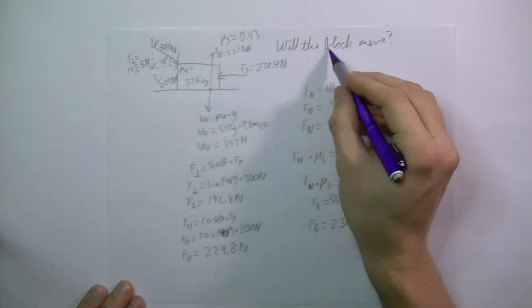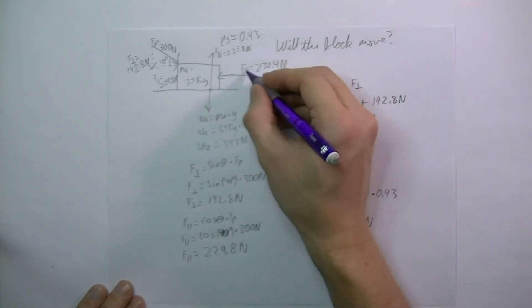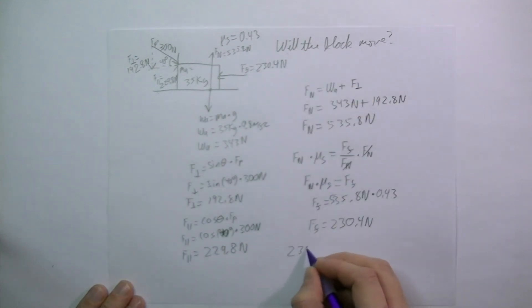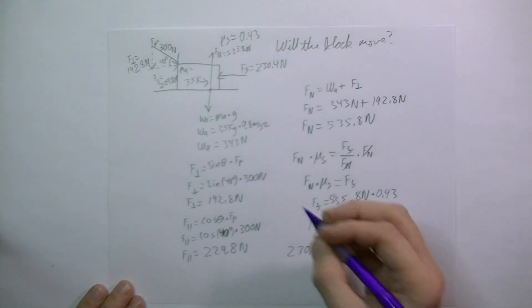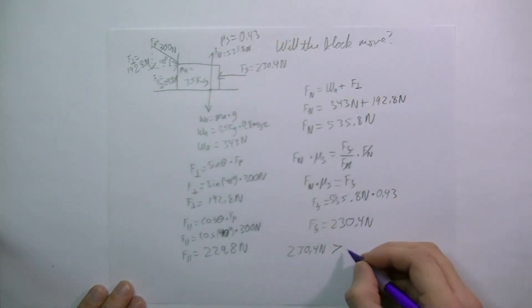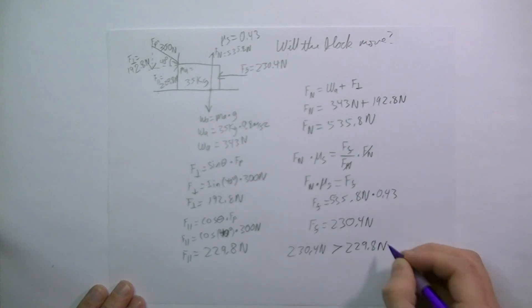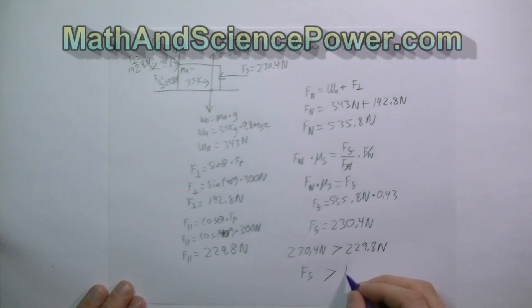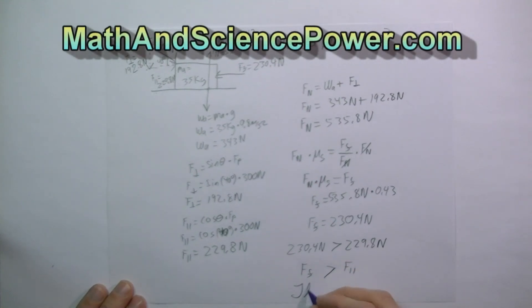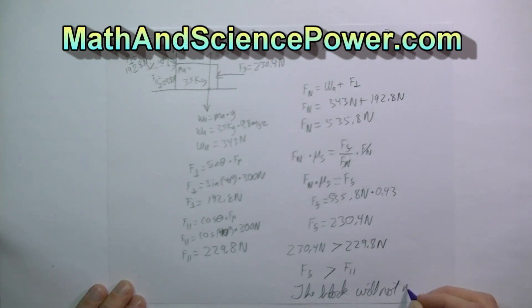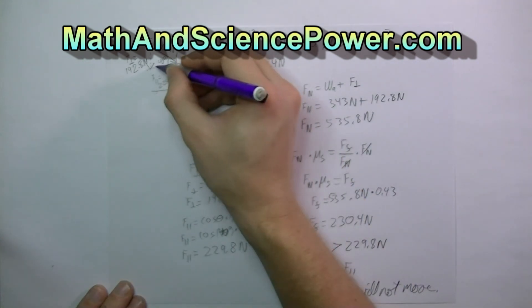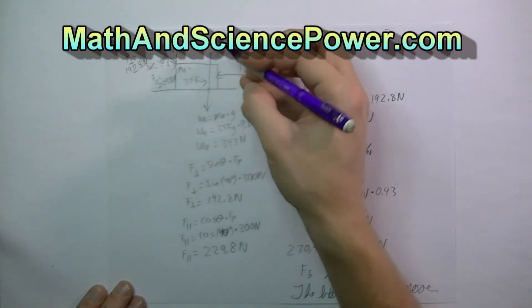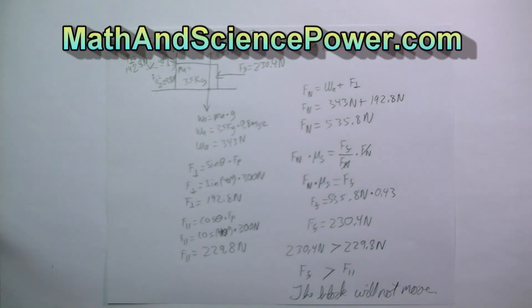The question is: will the block move? The frictional force is 230.4 newtons, which is greater than the force parallel of 229.8 newtons. Therefore, the frictional force is greater than the force parallel, and the block will not move. In other words, the force you're applying is not strong enough to overcome the frictional force. On behalf of MathAndSciencePower.com, I'm Joe — thanks for watching.